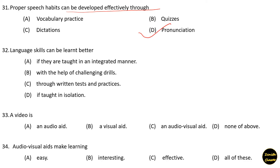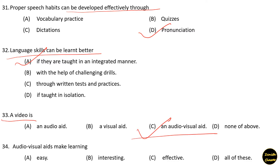Next question: Language skills can be learned better — option A: if they are taught in an integrated manner, option B: with the help of challenging drills, option C: through written tests and practices, option D: if taught in isolation. Option A is the correct answer. Next question: A video is an audio-visual aid.